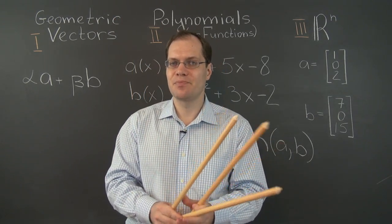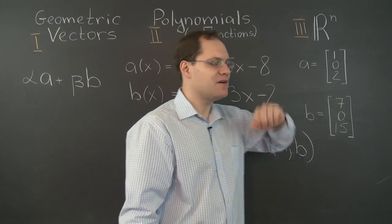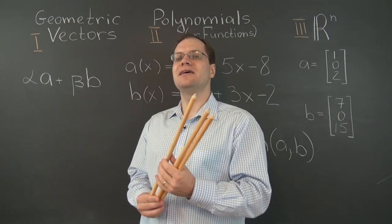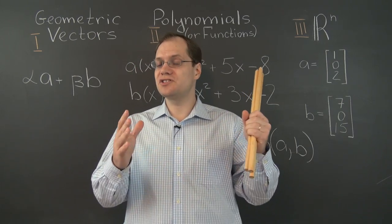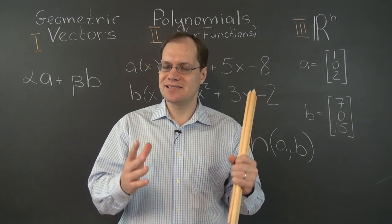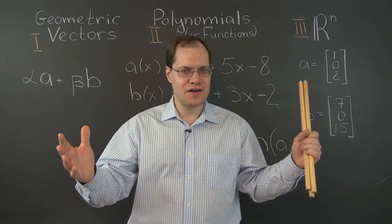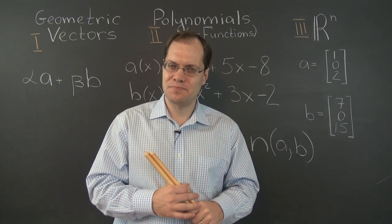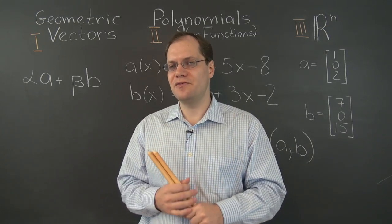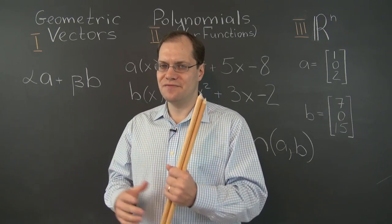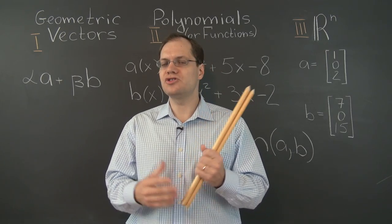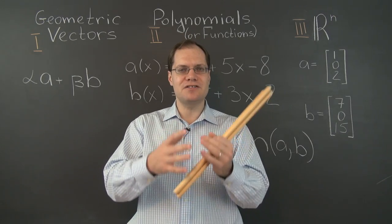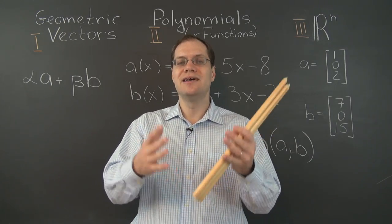As you might have guessed, the span of any number of vectors is actually a subspace — not just some subset. It's a subspace in the sense that if you take two vectors from the span of A and B and add them together, you get another vector from the span of A and B. And if you take a vector from the span of A and B and multiply it by any number, you get another vector from the span of A and B. So it's not just a subset — it's actually a subspace, a mini vector space of its own.